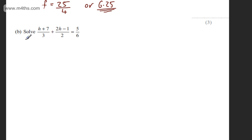Again, with this one, lots of different approaches. I'm going to multiply both sides of the equation by the lowest common multiple of the denominators. The lowest common multiple of 3, 2 and 6 is 6.